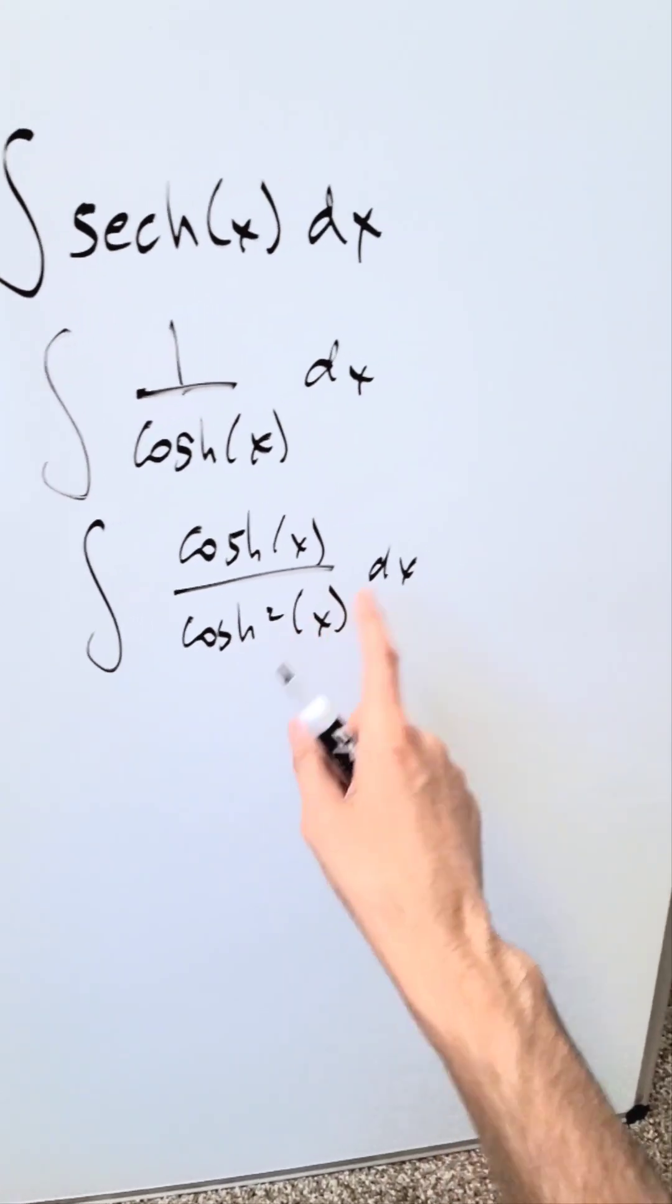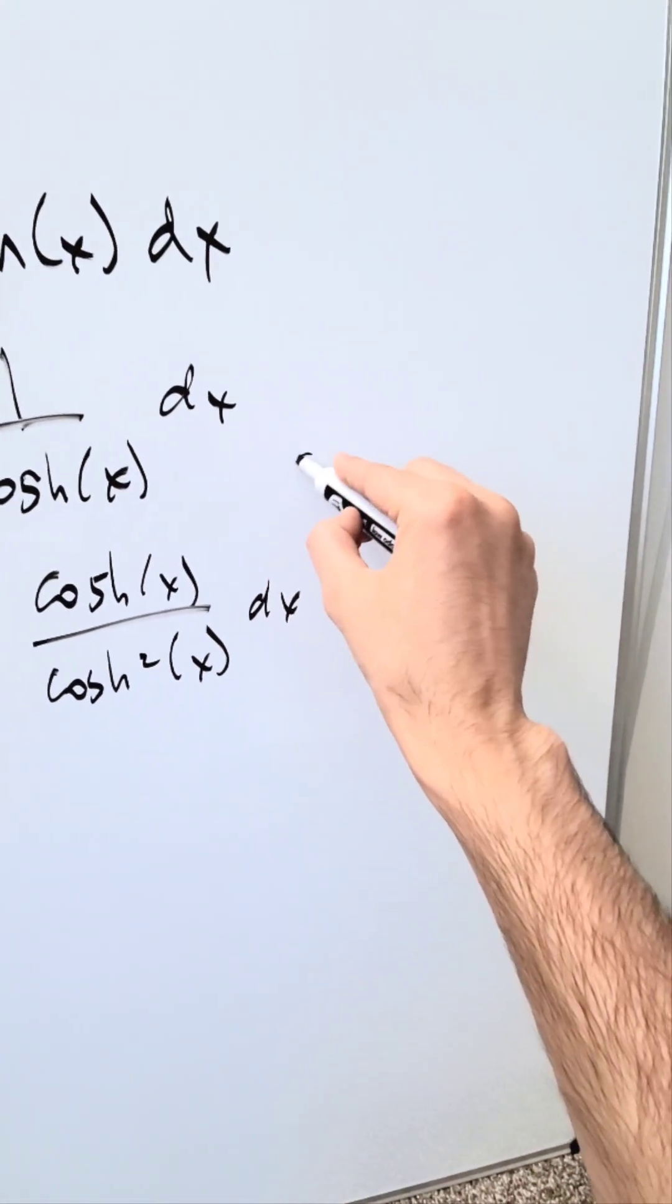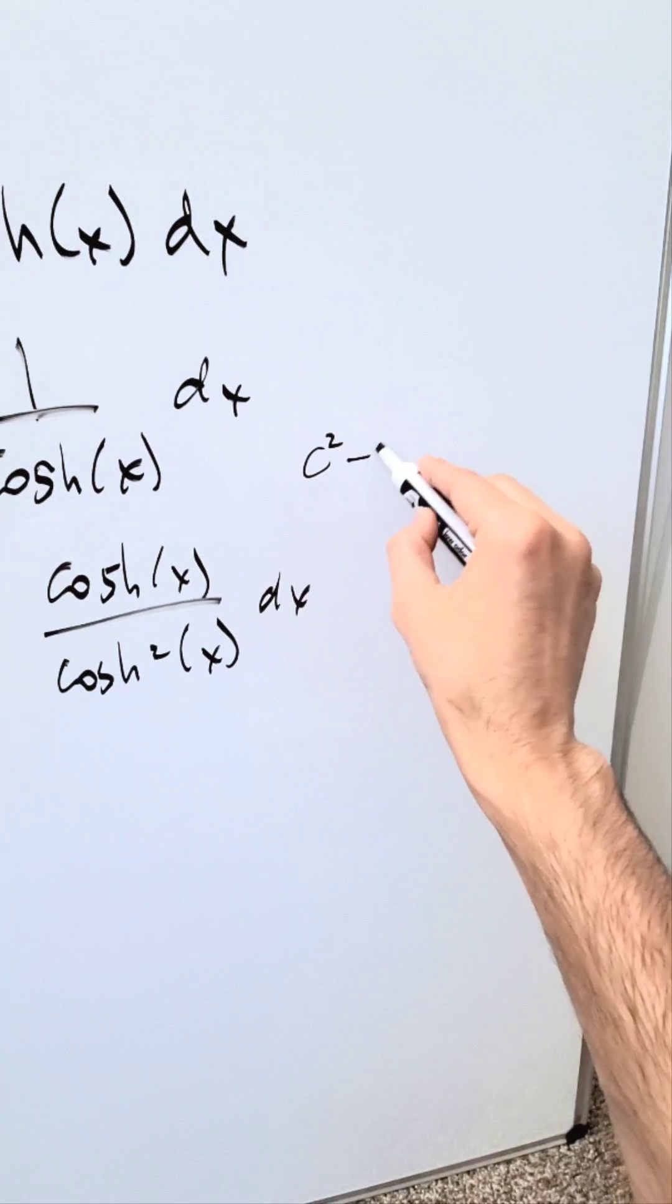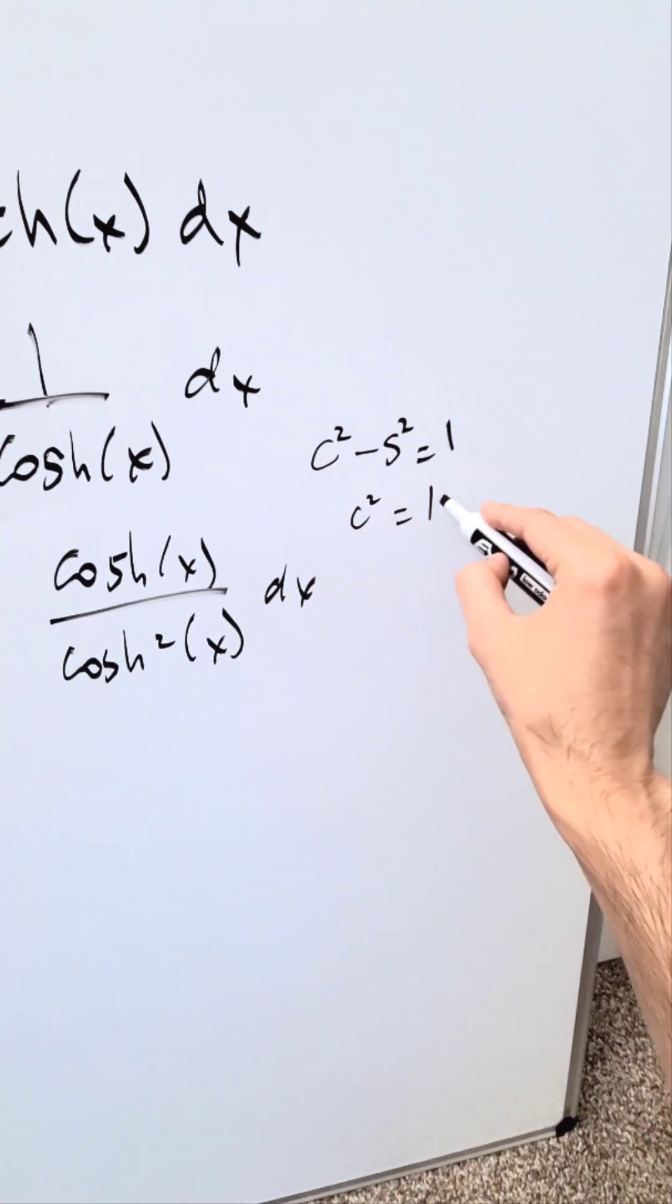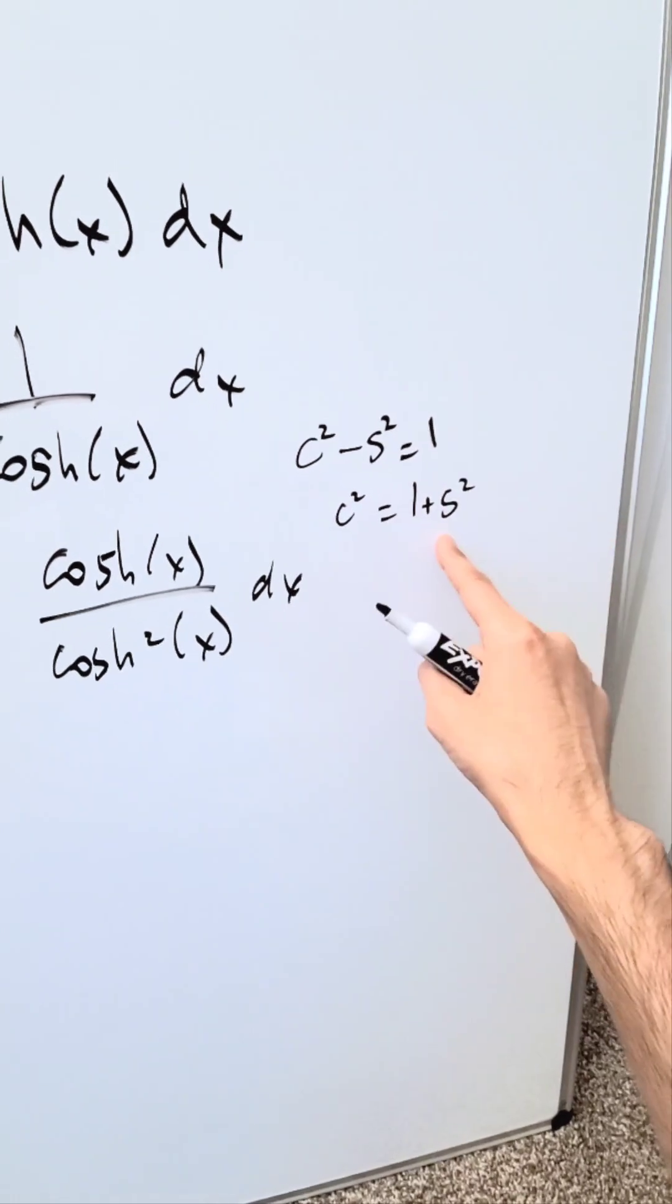Think about a hyperbolic identity. I'll abbreviate it for you right here. Hyperbolic cosine squared x minus hyperbolic sine squared x equals 1. Hyperbolic cosine squared x equals 1 plus hyperbolic sine squared x.